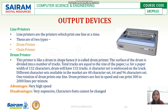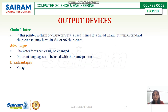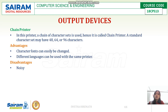The character font cannot be changed in drum printers — font size remains the same. The next type of line printer is the chain printer. In this printer, a chain of character sets is used. A standard character set may have 48, 64, or 96 characters. Advantages: character fonts can easily be changed, and different languages can be used with the same printer. Disadvantage: it is very noisy.